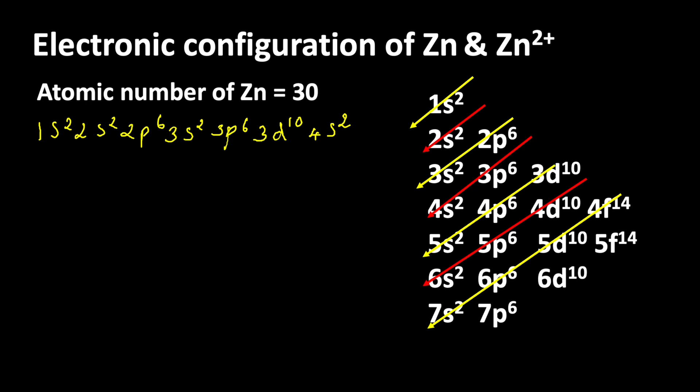Now we will write the electronic configuration of zinc 2 plus. Zinc 2 plus ions are formed when zinc loses 2 electrons. The atomic number of zinc is 30, so 30 minus 2 equals 28 electrons present in zinc 2 plus.